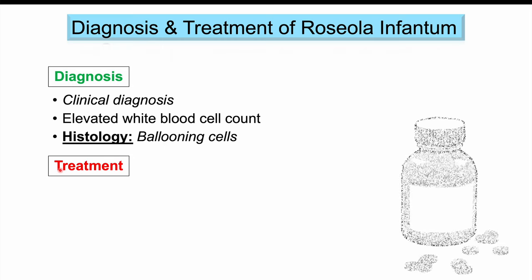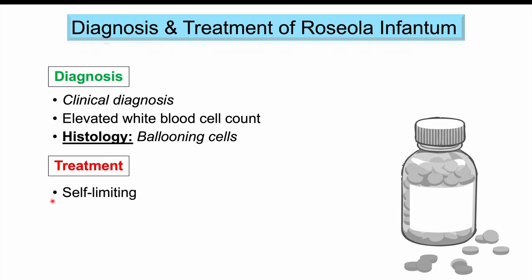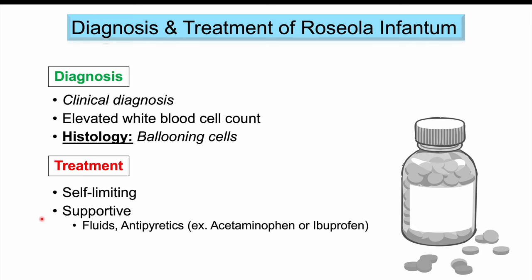Roseola infantum is a self-limiting condition, and because it is viral, there are no specific treatments. Management is supportive — treating the symptoms. Fluids are important, and antipyretic medications like acetaminophen and ibuprofen can help reduce the fever. Cold cloths can also be helpful. If complications arise, those will be treated accordingly, but most of the time only supportive treatment is required.